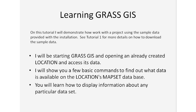In this tutorial I will demonstrate how to work with a project using the sample data provided with the installation. You will need to see tutorial number one to get the details on how to download that sample data. I will be starting GRASS GIS, opening an already created location, and accessing its data. I'll also show you a few basic commands to find out what data is available on the location's map set database, and you will learn how to display information about any particular dataset.